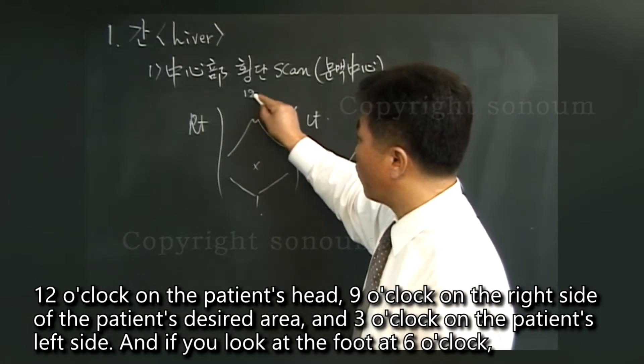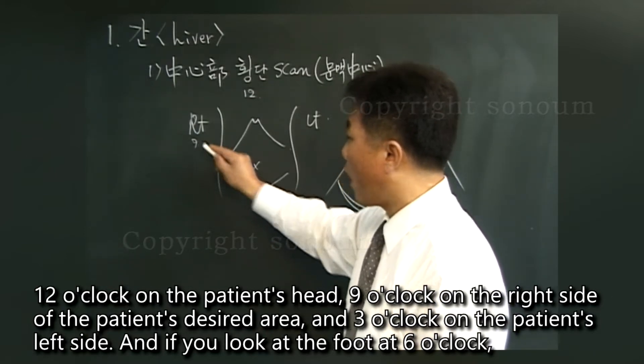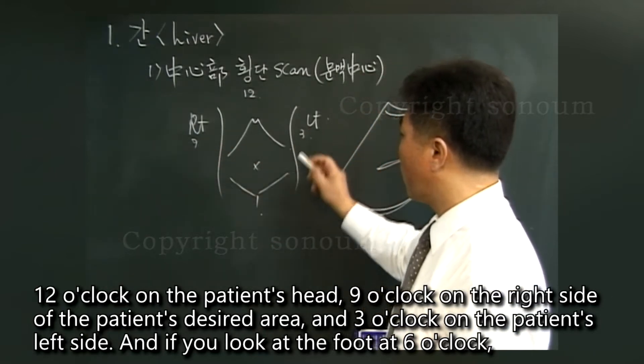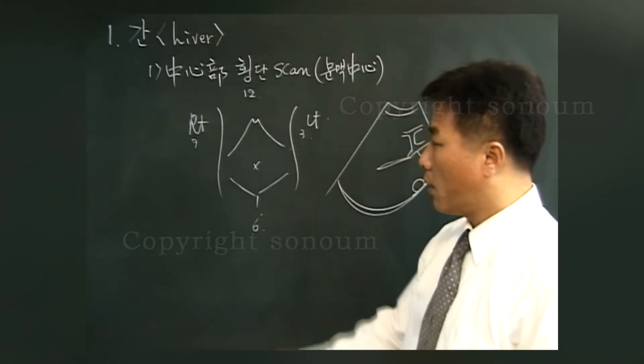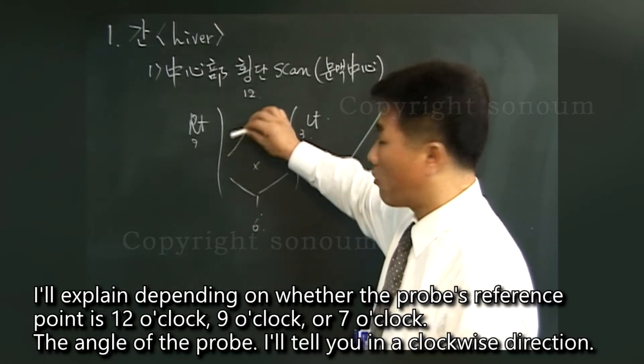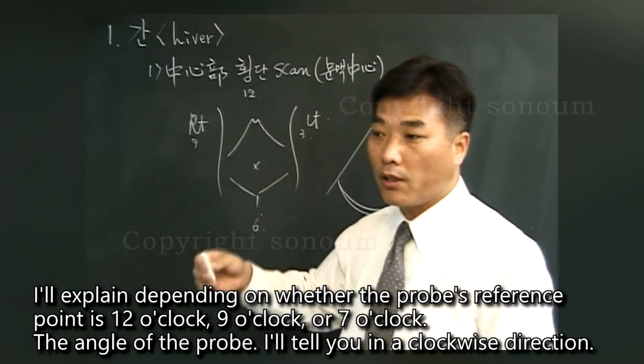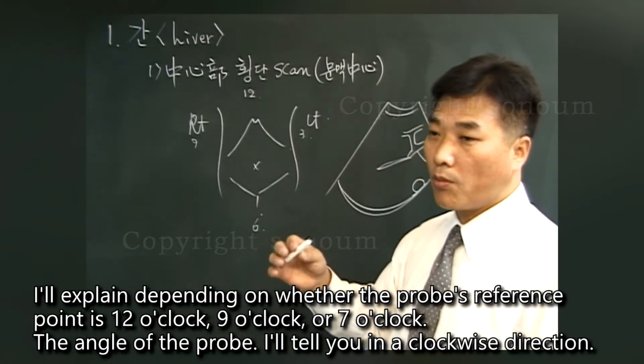12 o'clock on the patient's head, 9 o'clock on the right side of the patient's desired area, 3 o'clock on the patient's left side, and the foot at 6 o'clock. I'll explain depending on whether the probe's reference point is 12 o'clock, 9 o'clock, or 7 o'clock. The angle of the probe, I'll tell you in a clockwise direction.